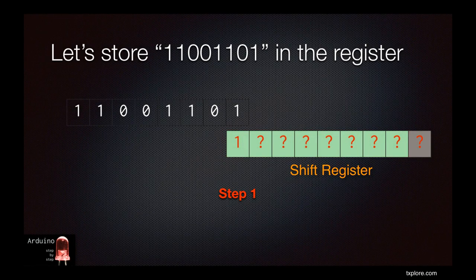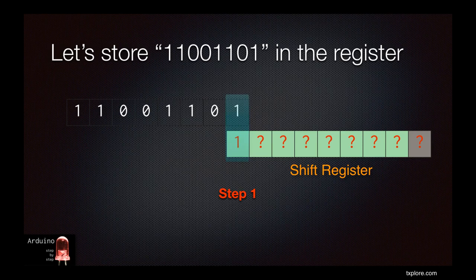In step 1, the least significant bit of the byte that I'm trying to store in the shift register is pushed into the shift register one at a time. So you can see now that the leftmost bit of the shift register contains a 1, which is the same value as the least significant bit of the byte that I'm trying to store in it, right above it.